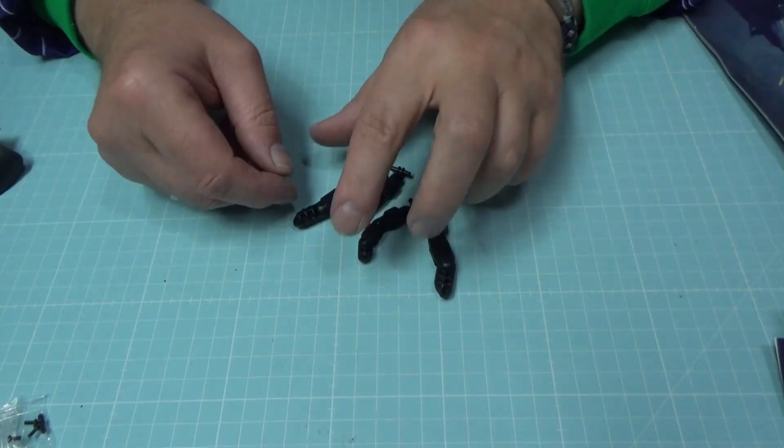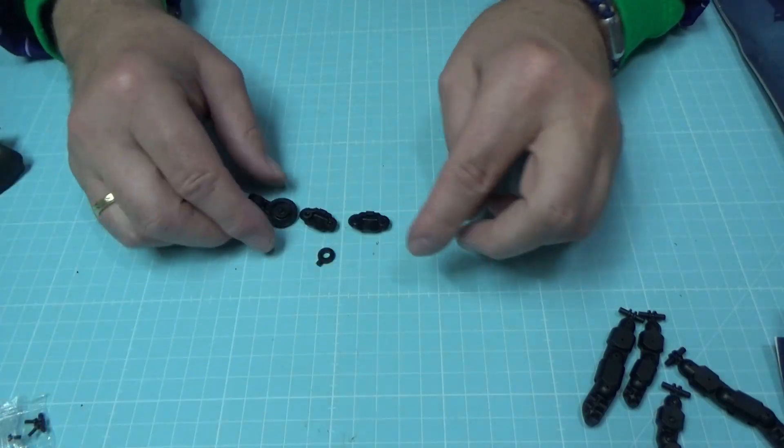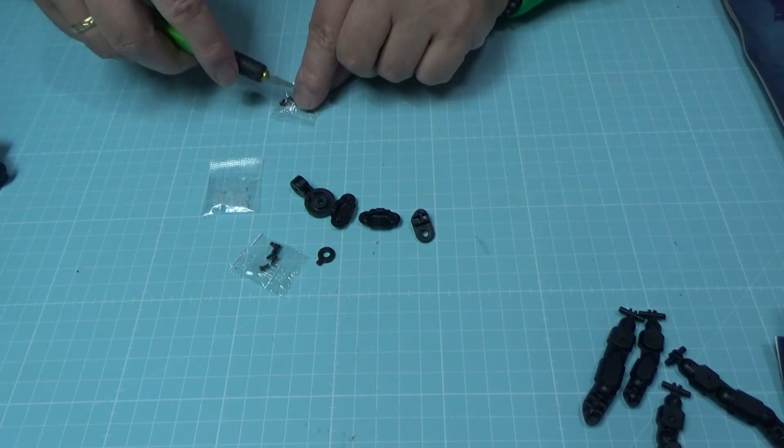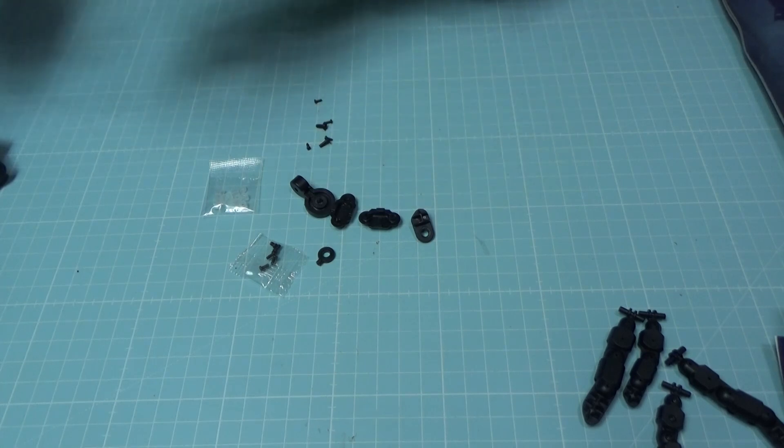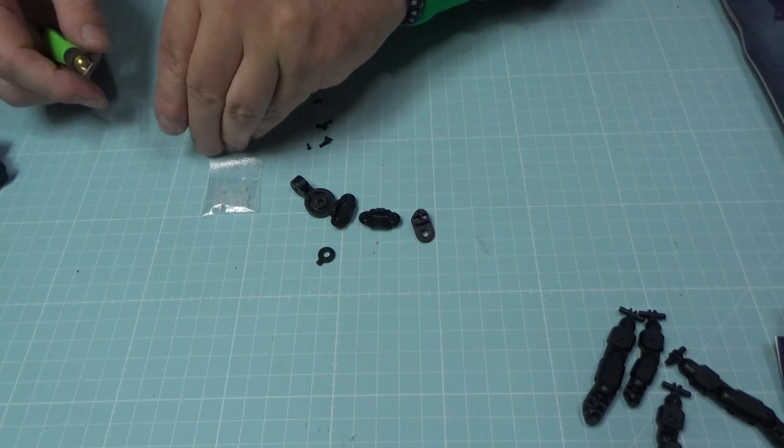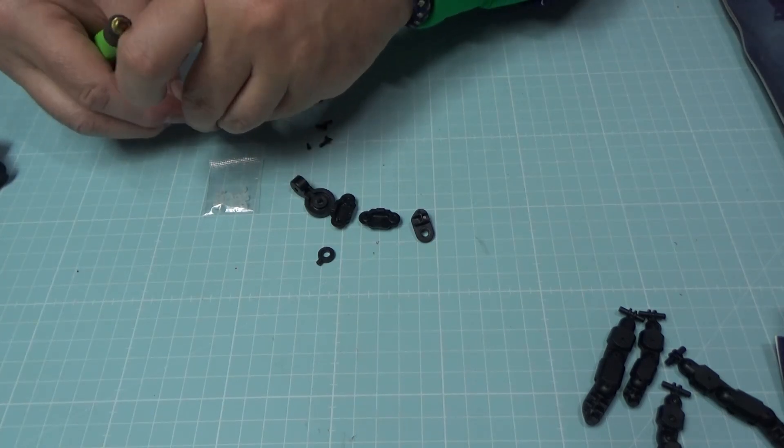Das zeige ich euch dann natürlich einmal extra. Erstmal machen wir zusammen die Bauphase 18. Dafür kommt ihr auf meinen Basteltisch, auf Jokers Basteltisch. Und ja, legen wir los. Hier haben wir noch die vier Fingers vom letzten Mal und dann haben wir hier einen Daumen, einen dicken Daumen, ein paar Schrauben dazu.